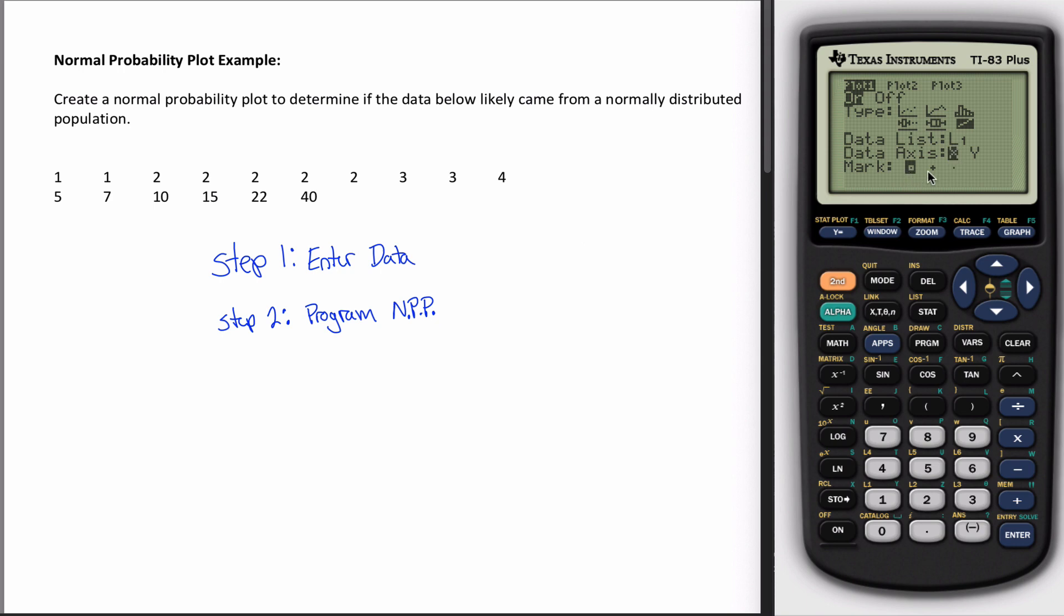And then it asks you what mark you want. I don't know why it asks you that. Choose whatever you want. It doesn't make a difference. It's just going to change how it shows up in your picture. So now I've told my calculator I programmed my normal probability plot.